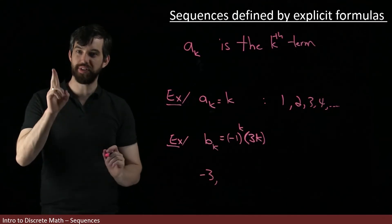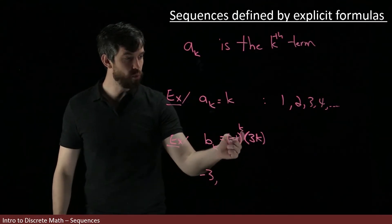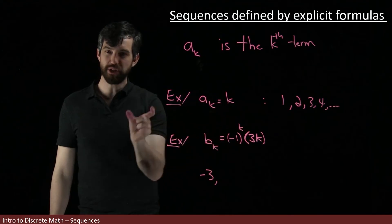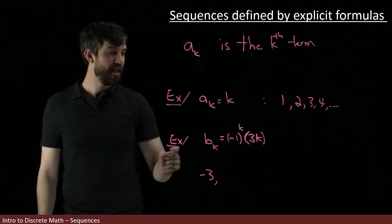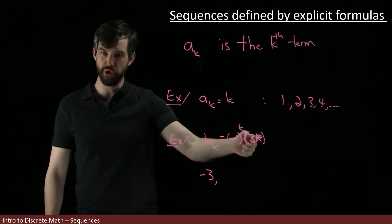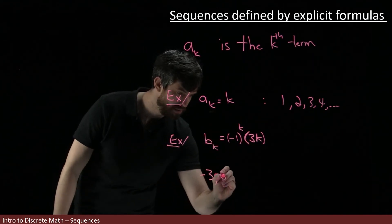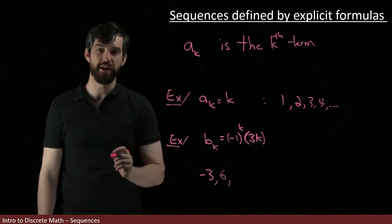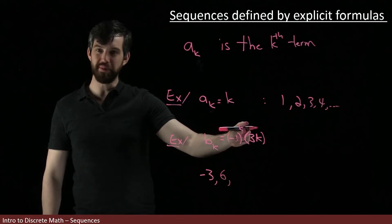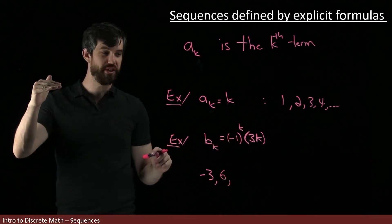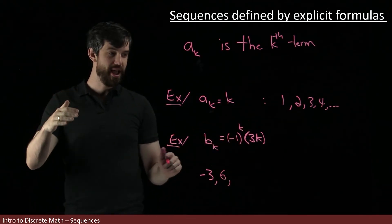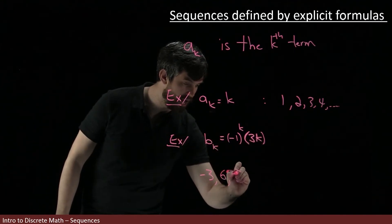And then I'm going to look at the next term, so this is k equal to two. Now it's minus one squared. Minus one squared is positive one, so there's no negative sign. And then three times two is going to be six. Okay, I'll look at my next one. Minus one cubed, it's an odd power now, so this is going to bring out a minus one, and then three times three is going to be nine, so minus nine.